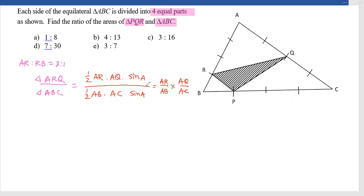And that ratio we can easily find. AR by RB is 3 to 1, so AR by AB will be equal to 3 by 4, multiplied by AQ by AC is half. This is ARQ by ABC.